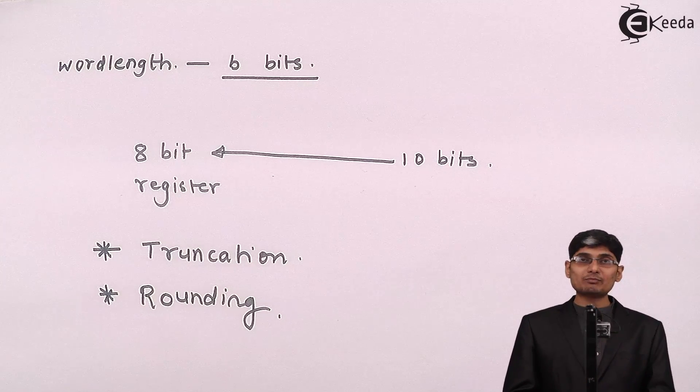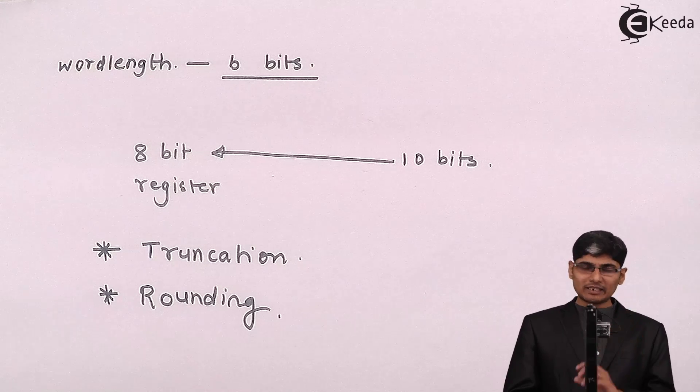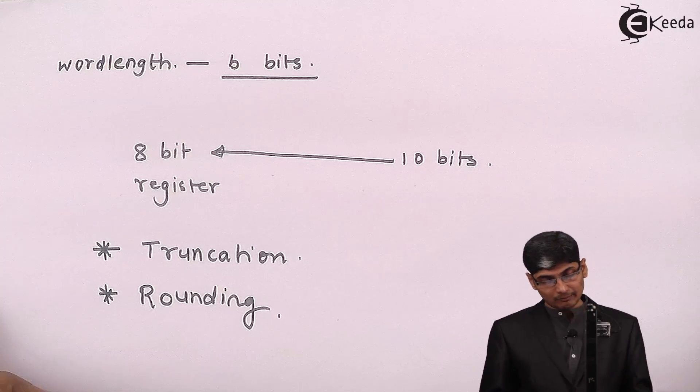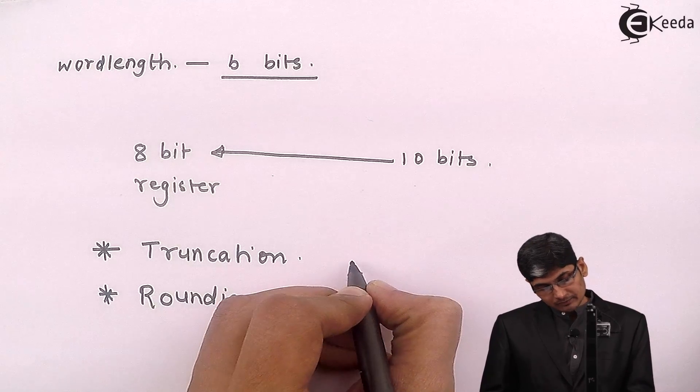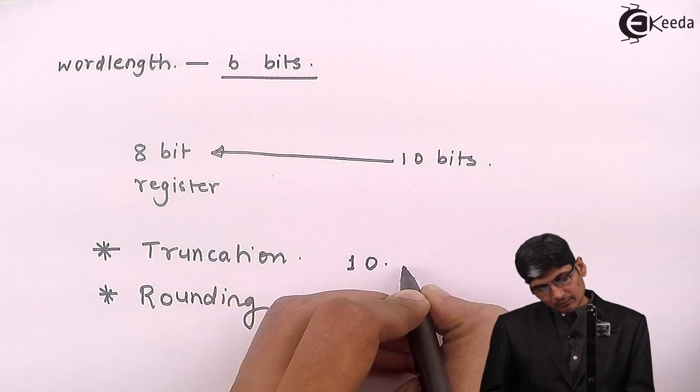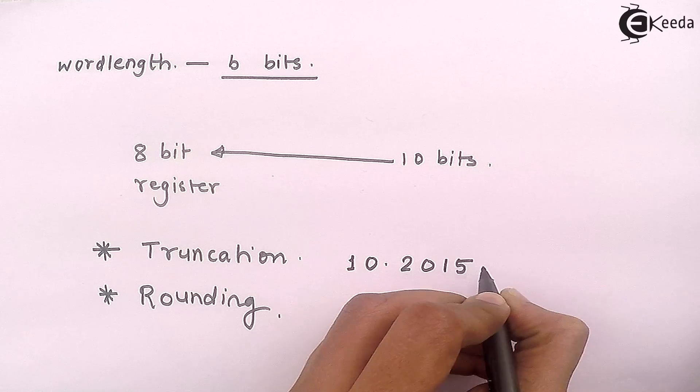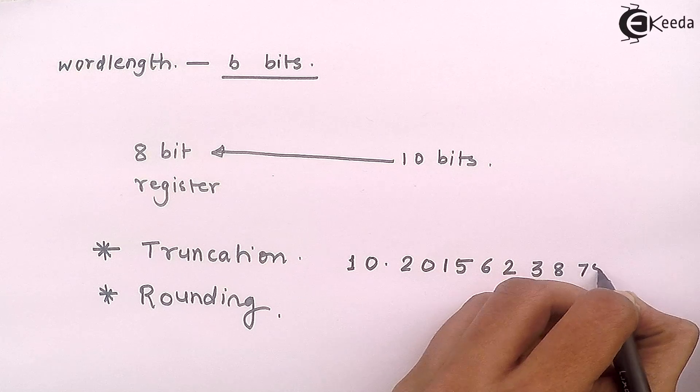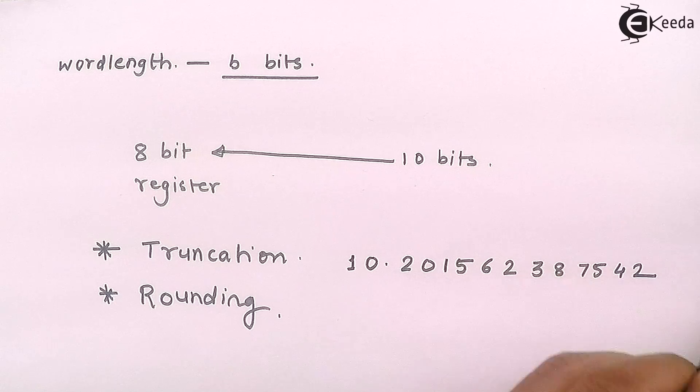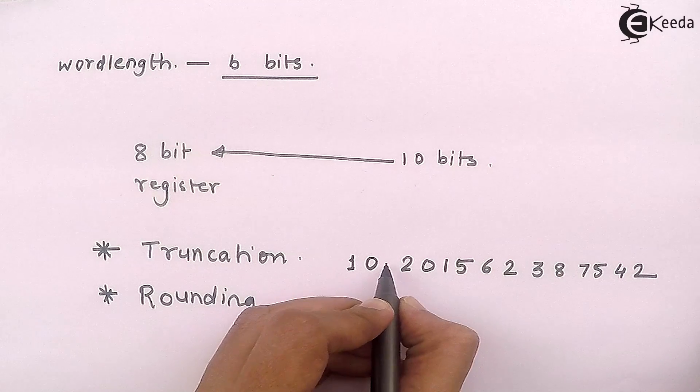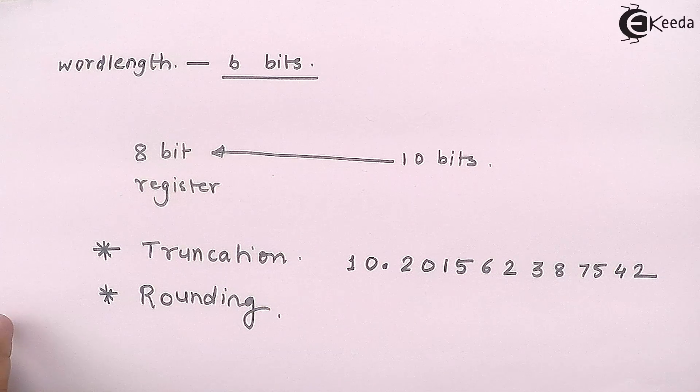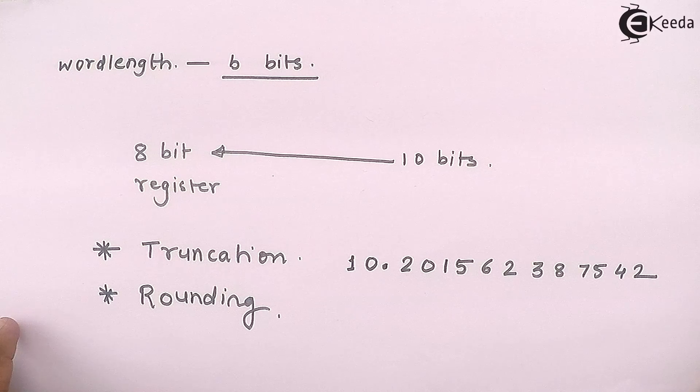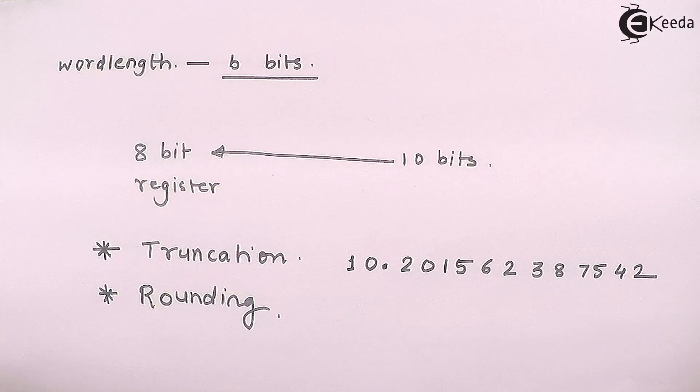These two effects I will explain using a decimal digit number instead of binary. Take for example I have a number 10.201562387542 and so on. So after 10 point this is a huge number. Now in my calculator I can show up to 10 digits.